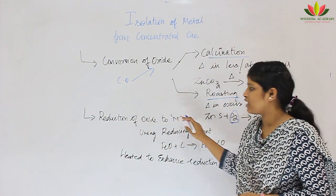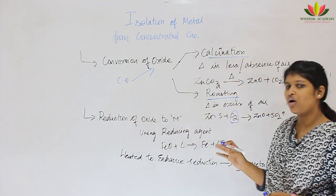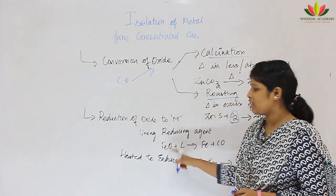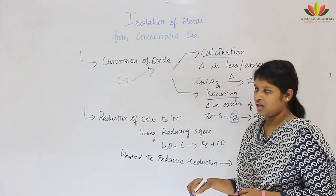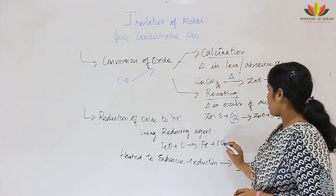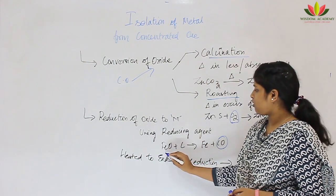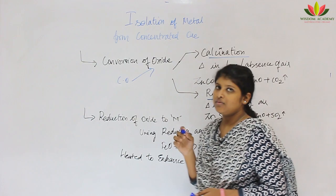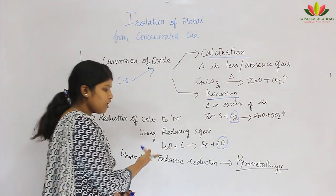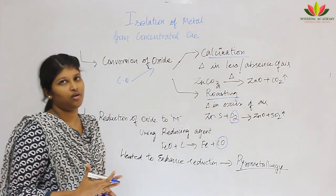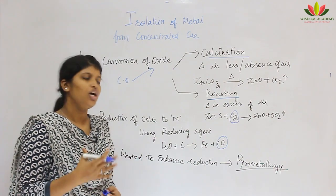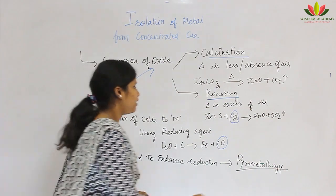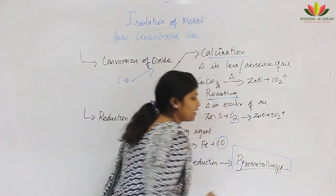The next step is conversion of the oxide to metal. Here we use a reducing agent. For example, if we have iron oxide, we use carbon as a reducing agent — it is removed as carbon monoxide and iron remains. So metallic oxide is converted to metal. In some cases, like iron, you need to supply a high amount of heat energy to enhance reduction. Whenever you apply high heat energy, that process is called pyrometallurgy.